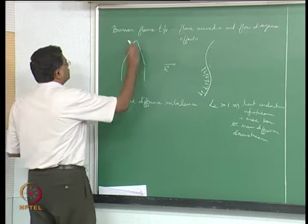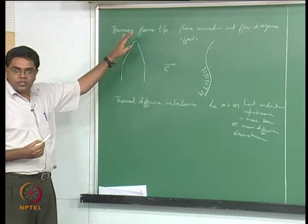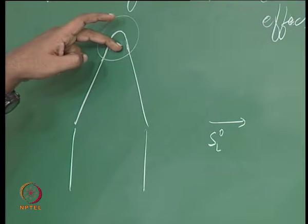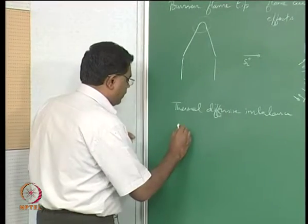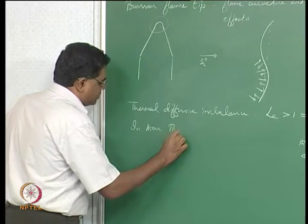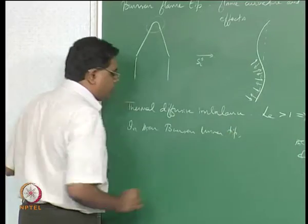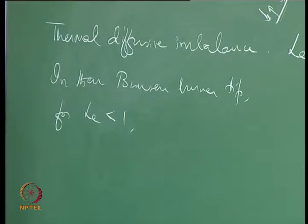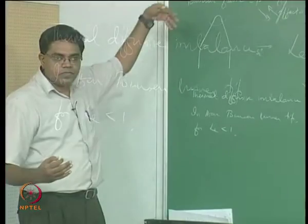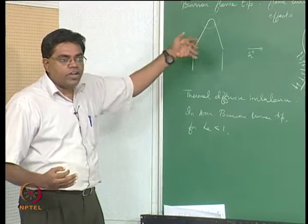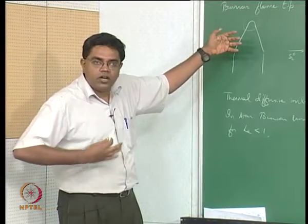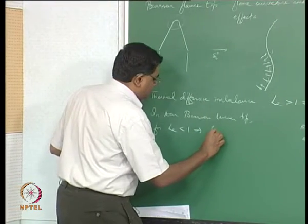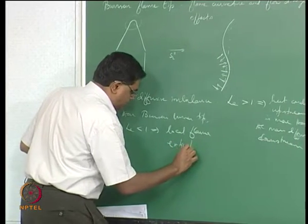So at the tip of the flame for Le > 1, we expect more intense burning and increased flame speed that can try to match the flow speed there. But for Le < 1 at the Bunsen burner tip, you have a greater extent of deficient species depletion compared to upstream heat conduction, so the flame is essentially running out of reactant even as it tries to conduct heat upstream. This could lead to local flame extinction.